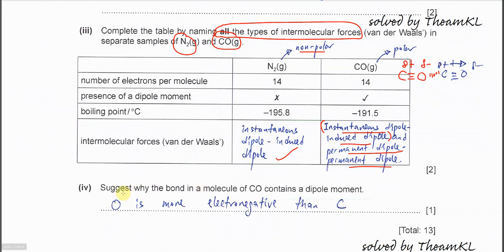Part iv. Suggest why the bond in the molecule of CO contains a dipole moment, the net dipole. Because they have different electronegativity, or you can say oxygen is more electronegative than carbon. That's all for this question. Thank you.